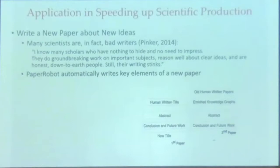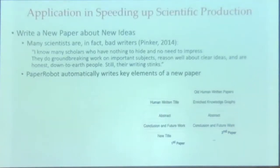We would like to automate large graph construction, create new ideas, and also write them. But of course we cannot let the robot do the experiments, so the automated process can only be applied to the introduction, abstract, and the conclusion and future work sections. We want to get a title from a scientist, look at the large knowledge graph to find background knowledge, do link prediction to enrich the idea, write the abstract, use the abstract as input for conclusion and future work extension, and then from future work create a new title. This is a self-production process.